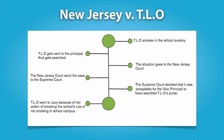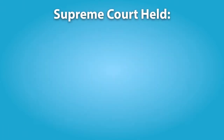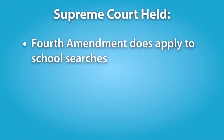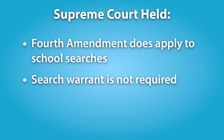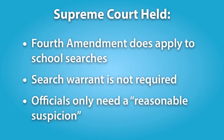The principal notified the student's parents and the police, and TLO subsequently confessed that she had been selling marijuana at the high school. The state subsequently brought delinquency charges against TLO in juvenile court, and TLO moved to suppress the evidence found in her purse as well as her confession, which she argued was tainted by an unlawful, warrantless search. In upholding the validity of the search, the Supreme Court held: one, that the Fourth Amendment does apply to school searches; but two, that a search warrant is not required before searching a student; and three, that only a reasonable suspicion by school officials that a student has violated the law or school rules is legally required to conduct a search.